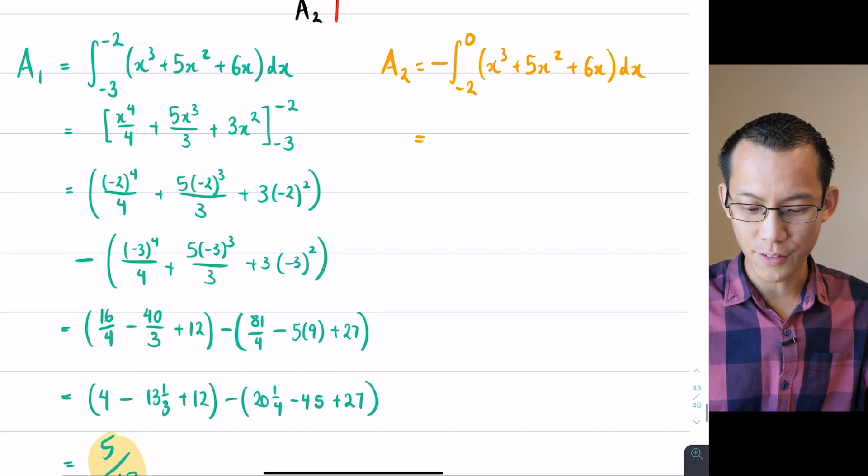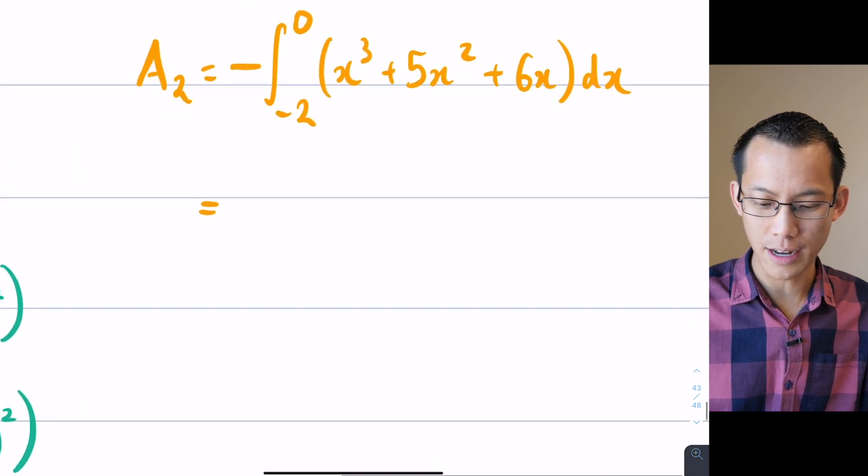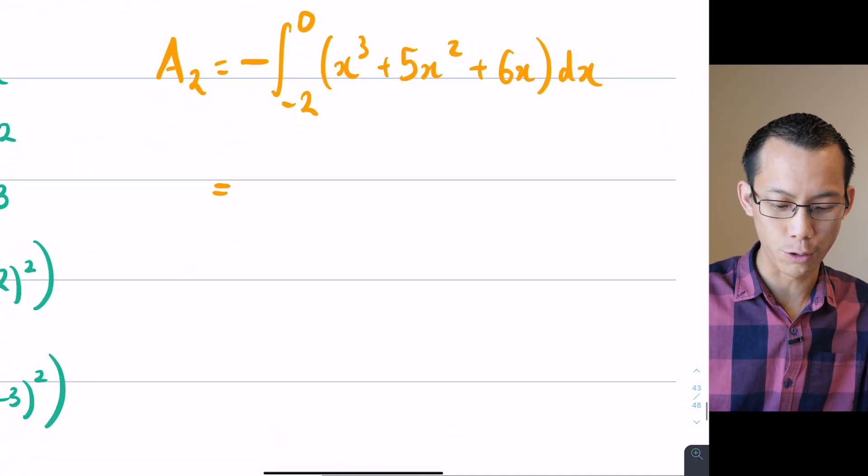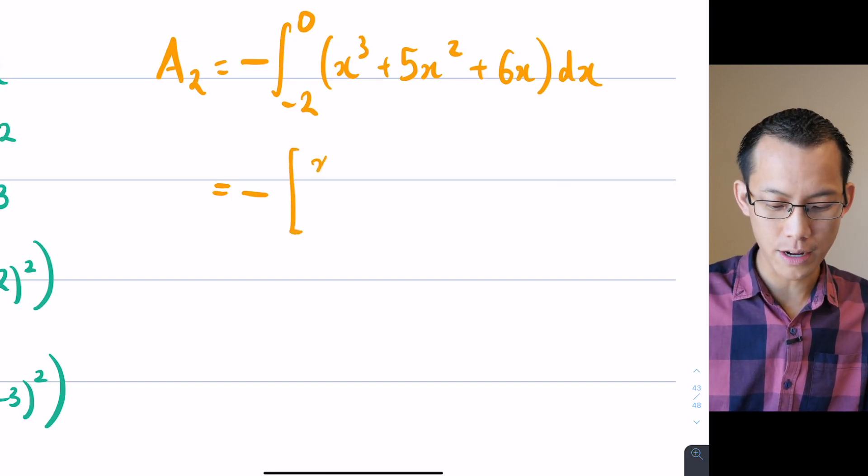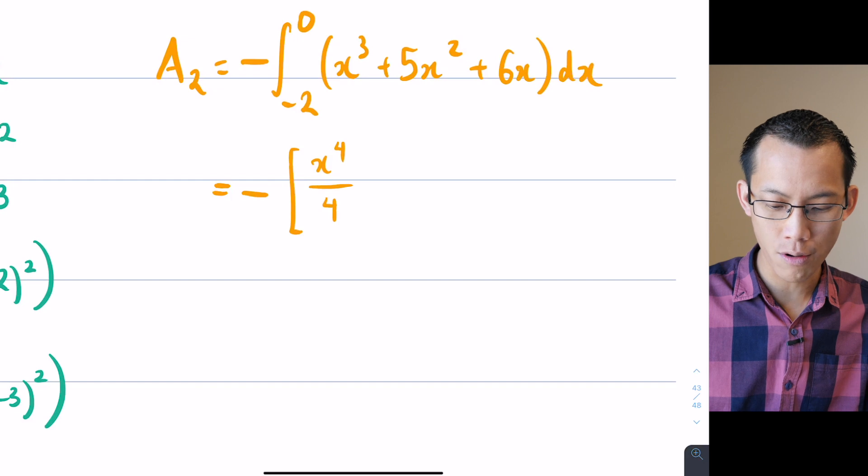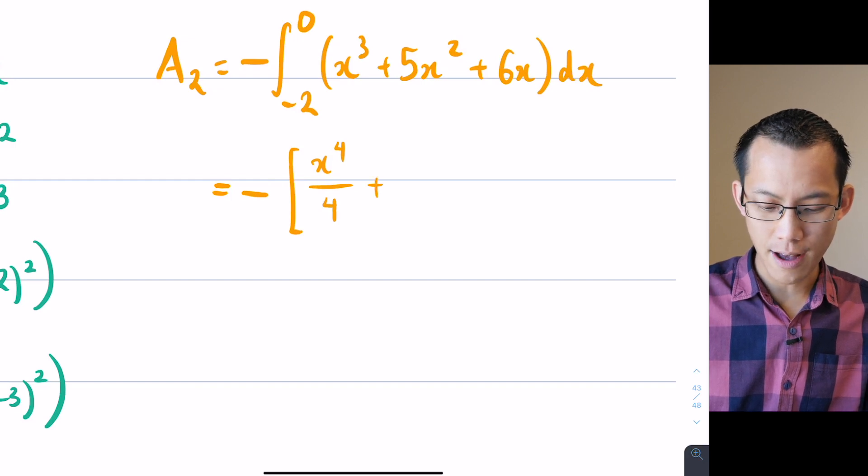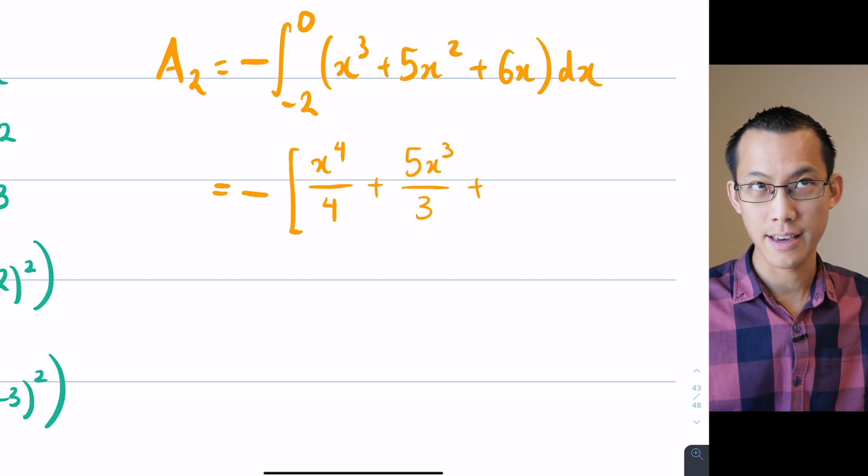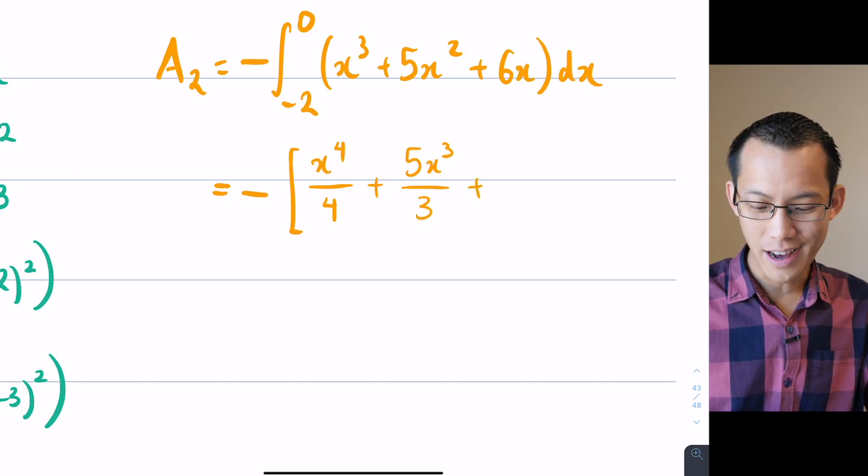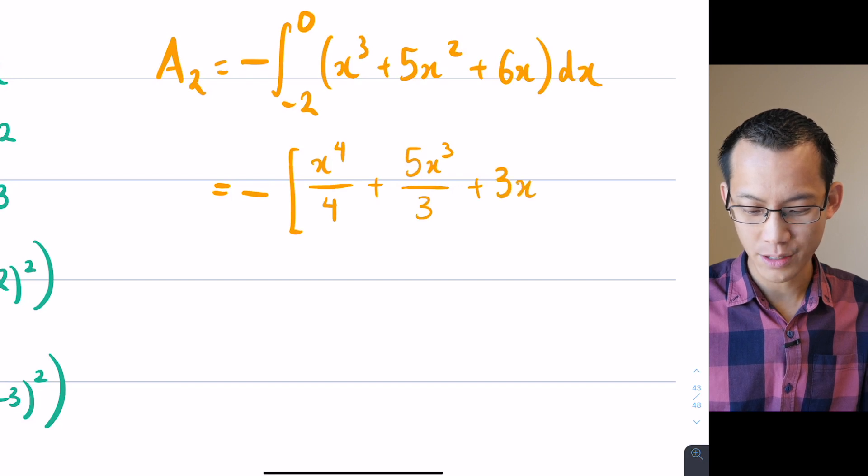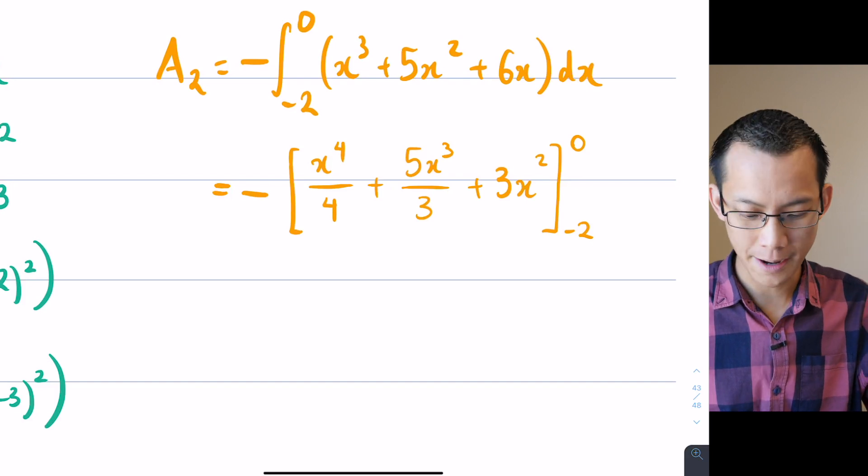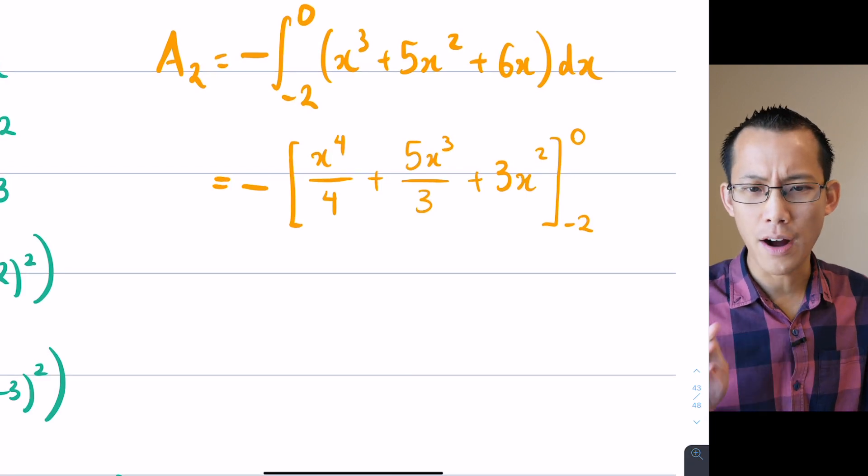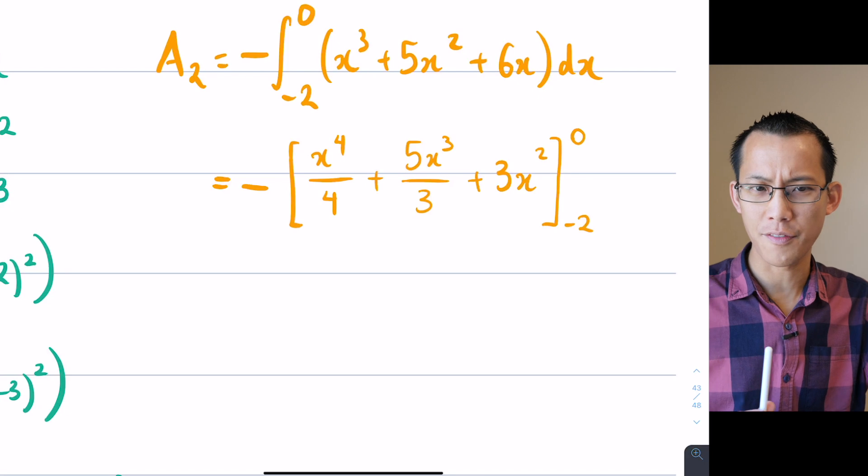So for starters, let's have a go over here. I'm just going to be working on this one integral. I've got the minus sign out the front, and then I go for my primitive function. So here I've got x to the 4 on 4, plus 5x to the 3 on 3, plus we saw this is the 6x to the 2 on 2, also known as 3x squared. And then I'm going from negative 2 to 0. Okay. How are we going so far?